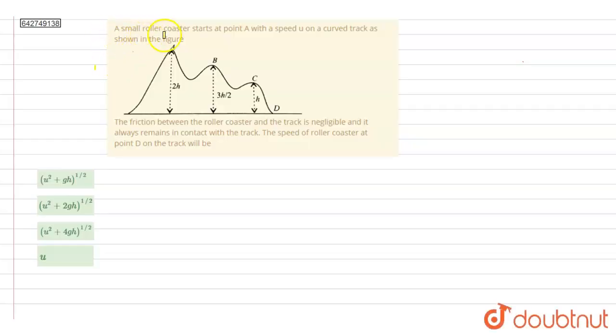A small roller coaster starts at point A with a speed U on a curved track as shown in the figure. The friction between the roller coaster and the track is negligible and it always remains in contact with the track. The speed of the roller coaster at point D on the track will be, so we have to find the speed of the roller coaster at this point, at point D.